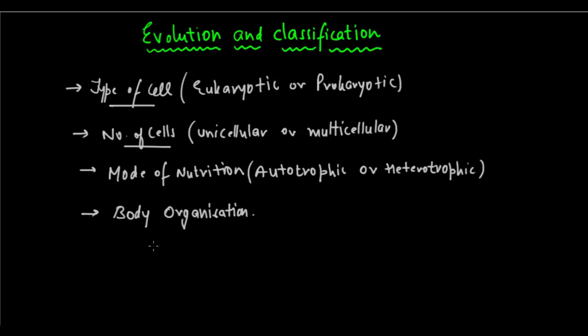So these are the different factors we take into consideration for classification. When we determine evolutionary relationships between organisms - whether they are closely related evolutionarily, whether they have closely evolved - when we look at these aspects,